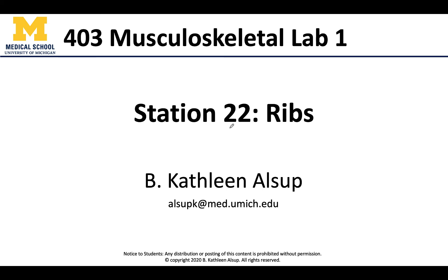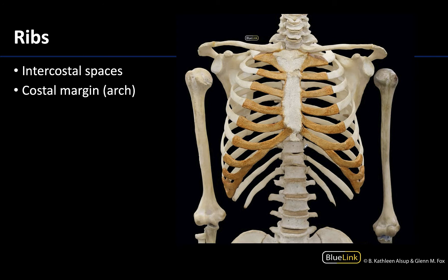Hello anatomy colleagues, this is Dr. Alsup, and welcome to station number 22 where we are talking all things ribs. To review the basic structure of the thoracic cage, you are going to have the sternum right here in the midline, and then you will have the 12 pairs of ribs that are going to be lateral and posterior to the sternum.